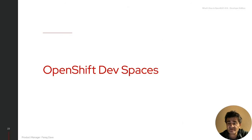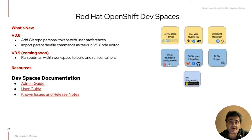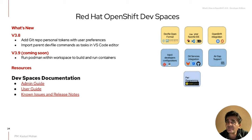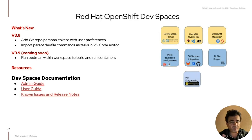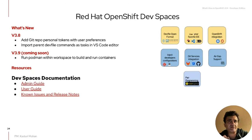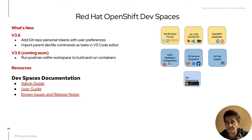Let's talk about OpenShift Dev Spaces. We just released version 3.8 and are getting ready to release version 3.9 in October. In 3.8, we focused on improving the experience for developers who want to provide their own personal access tokens for Git repos like Bitbucket, GitHub, and GitLab, saving these tokens in the workspace as part of user preferences. We also made it possible for dev file commands to be brought into VS Code editor as tasks, allowing you to import tasks into VS Code by specifying commands in the parent dev files.